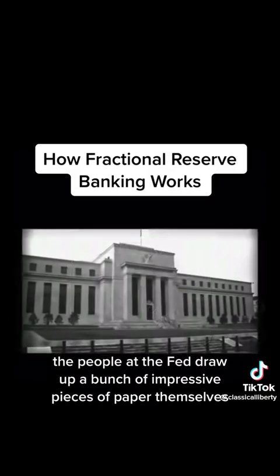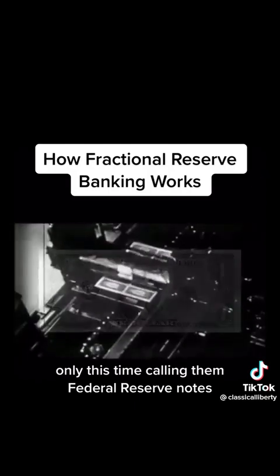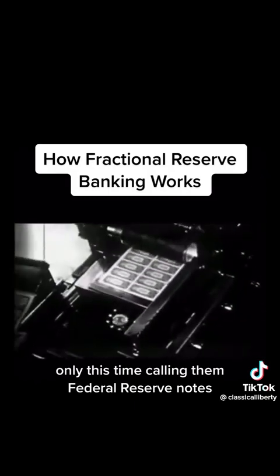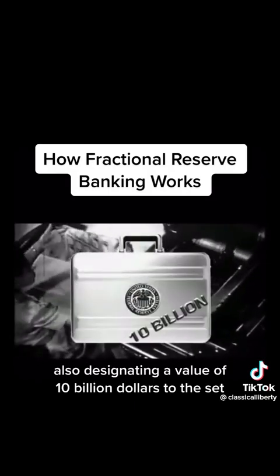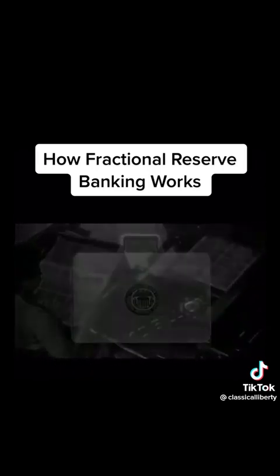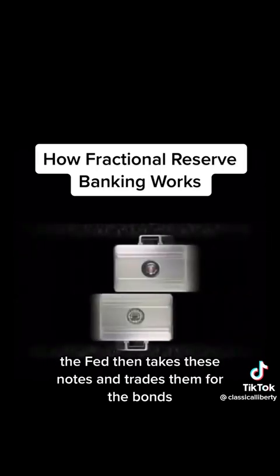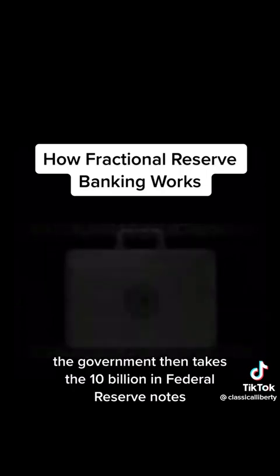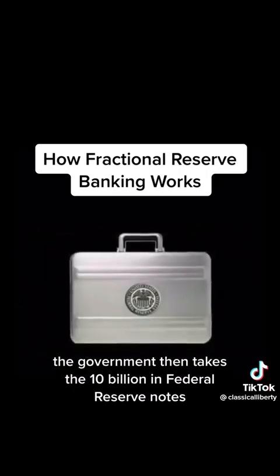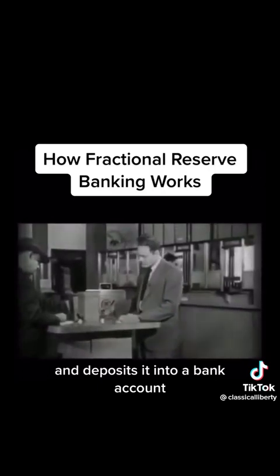In turn, the people at the Fed draw up a bunch of impressive pieces of paper themselves, only this time calling them Federal Reserve notes, also designating a value of $10 billion. The Fed then takes these notes and trades them for the bonds. Once this exchange is complete, the government takes the $10 billion in Federal Reserve notes and deposits it into a bank account.